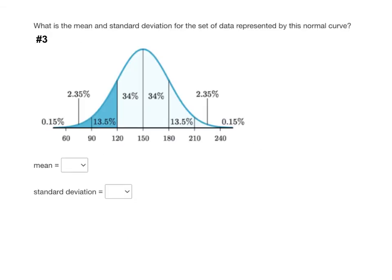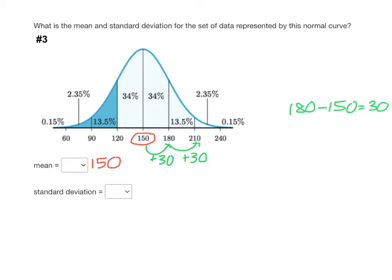Here is problem number three off of the homework assignment. This time we have the curve drawn and we're asked: what is the mean and what is the standard deviation of the data represented by the normal curve? The mean we can find by going to the center of our curve — here the mean is 150. So you're going to find 150 from the drop down on number three. For standard deviation, we need to find the pattern. We know that 150 is the mean and 180 is one standard deviation above the mean. If you do 180 minus 150, that's equal to 30. So the standard deviation is 30, and you're going to choose 30 from the drop down.